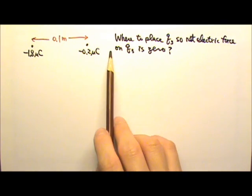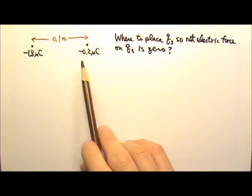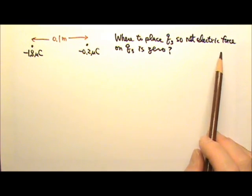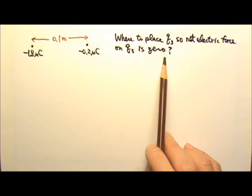A system consists of two point charges fixed in place. Where should a third charge Q3 be placed so that the net electric force on Q3 is zero?